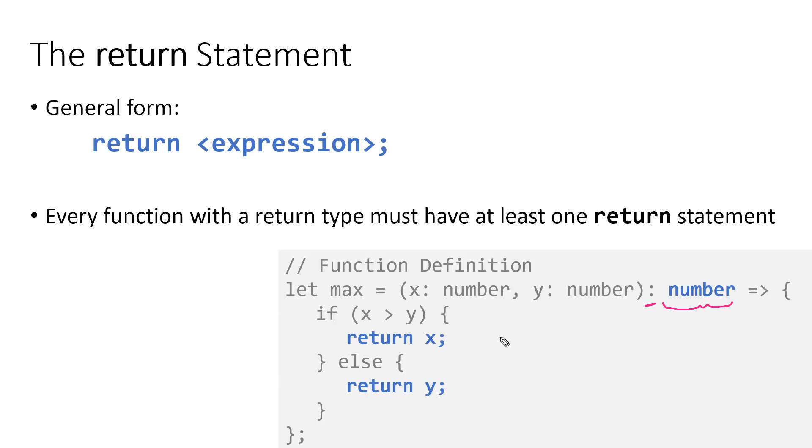So this function max is saying, hey, I'm going to give you back a number if you call me. And inside of this function, you can see that we, sure enough, have two return statements inside: return x and return y.